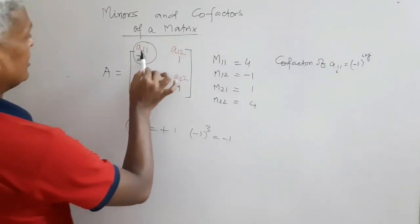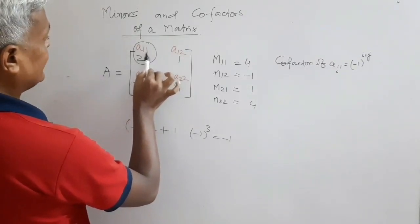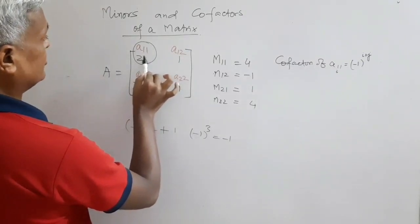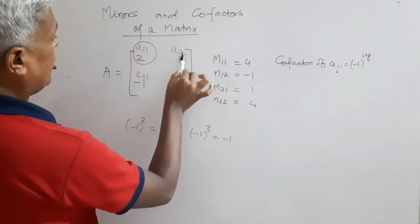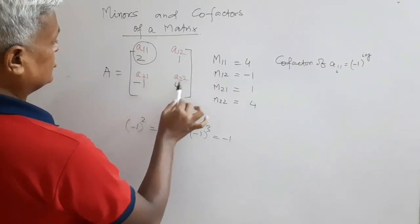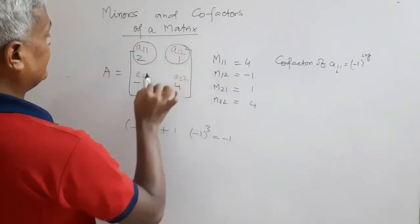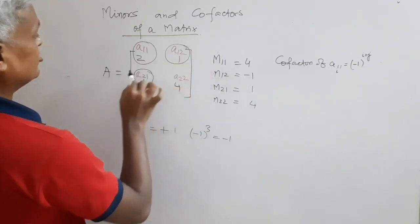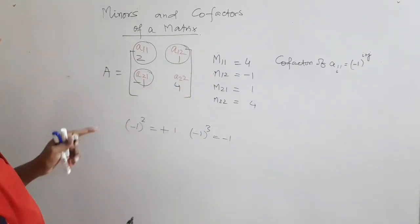So for the 2x2 matrix, checking each subscript sum: 1+1=2 (even), 1+2=3 (odd), 2+1=3 (odd), 2+2=4 (even). This means elements A12 and A21 will have their signs changed, while A11 and A22 remain as they are.